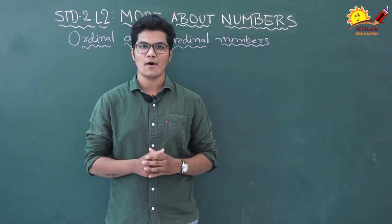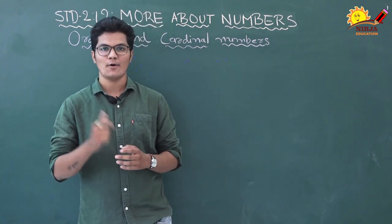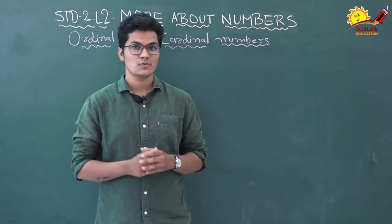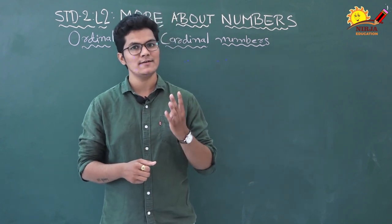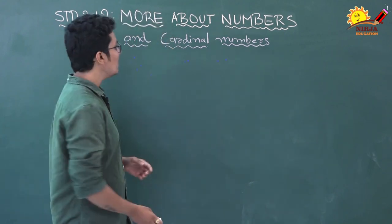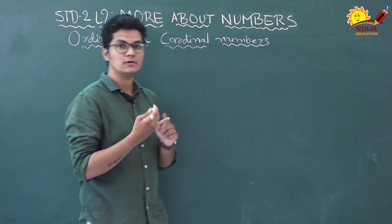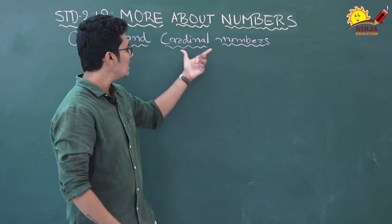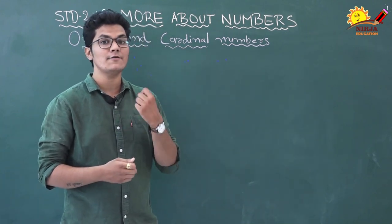Children, we have learned about odd and even numbers. Now let's learn about ordinal numbers and cardinal numbers. When we count one, two, three, four, five and so on, those numbers are called cardinal numbers. When we count normally — one, two, three, four, five and so on — those are cardinal numbers.